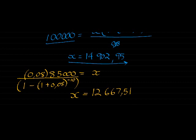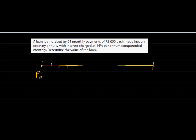Let's look at one more example. A loan is amortized by 24 monthly payments of 2,000 Rand each, made into an ordinary annuity with interest charged at 14% per annum compounded monthly. We determine the value of the loan — how much will a bank give you if you pay back 24 monthly payments of 2,000 Rand? My first payment is made in one month's time and it's 2,000 each time, all the way up to 24 payments.